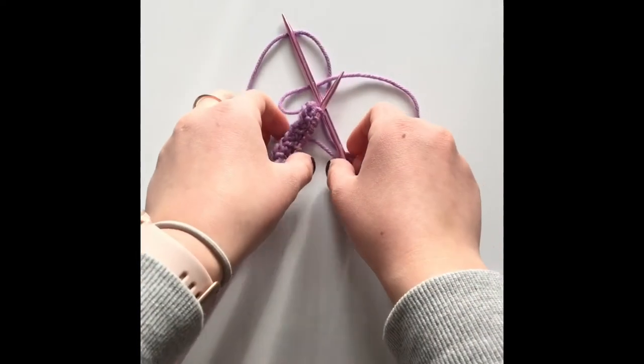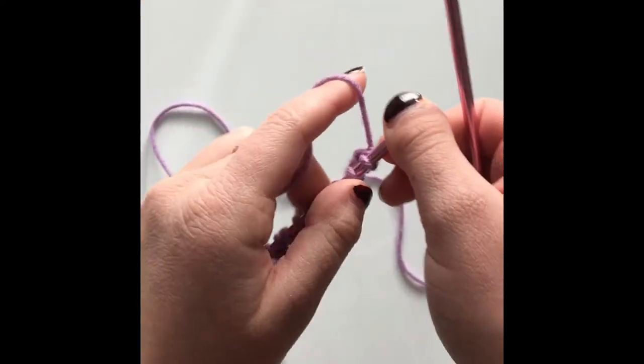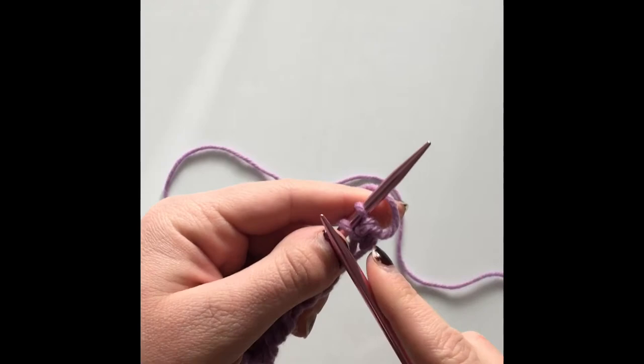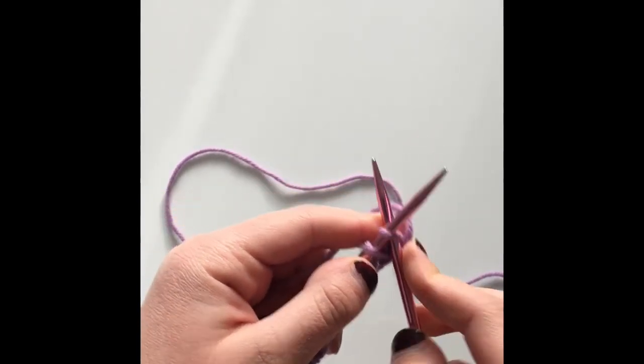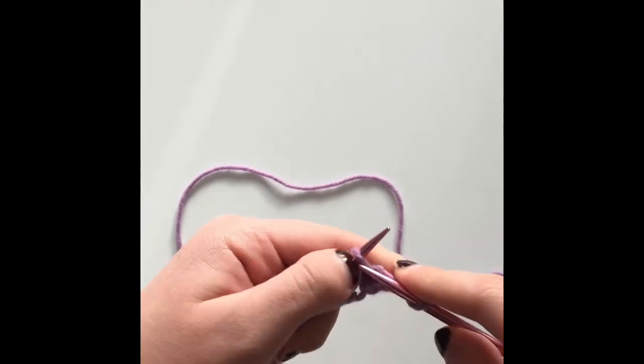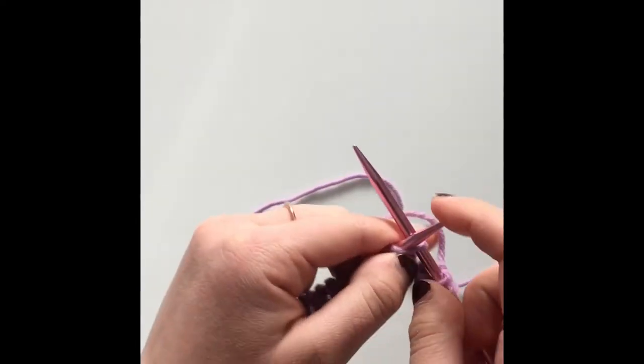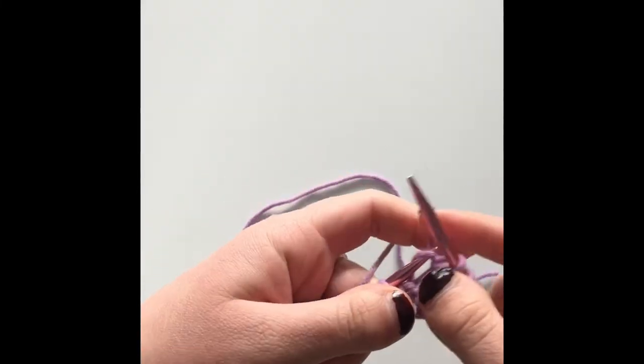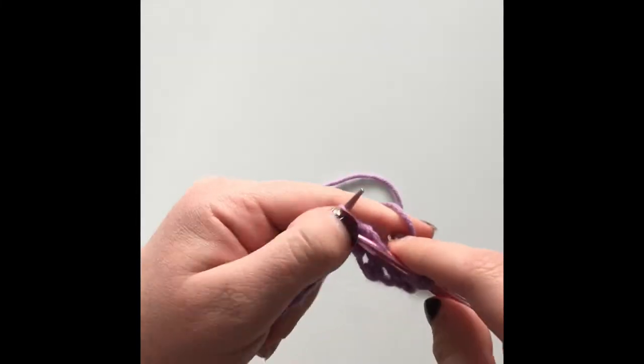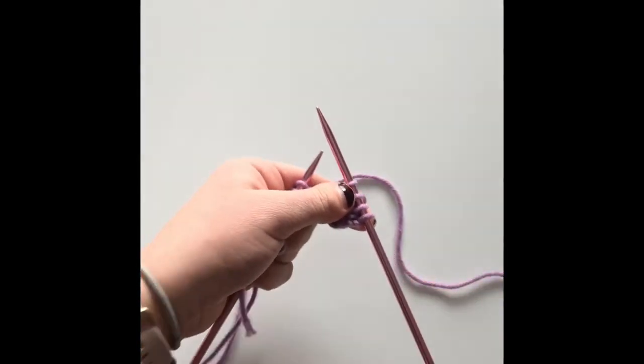Okay, so I finished row two and now I'm on to row three. And for row three, I will just be simply knitting every stitch. Like I said before, row one and row three are exactly the same, where we just knit every single stitch in the row. So once you finish that, just meet me back here for the last row.